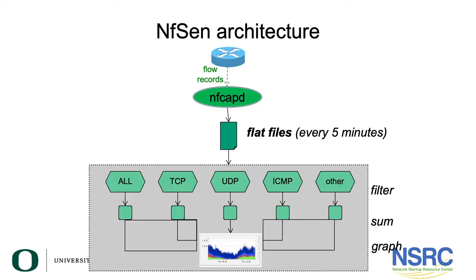The slide shows the nf-sen architecture. We have the router exporting flow records. nf-sen manages nf-capt, which produces the flat files. nf-sen will take these flat files and categorize them according to whether the traffic is TCP, UDP, ICMP, or other, and then produce graphs or combine all of these as an overall view of the traffic flow in the network.